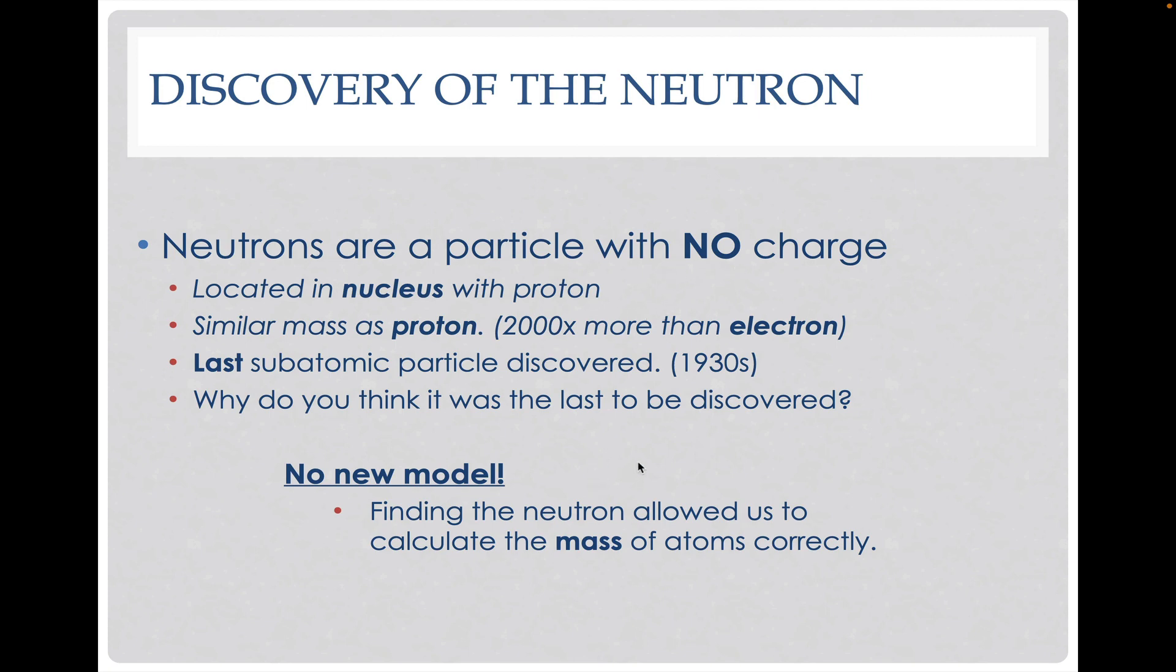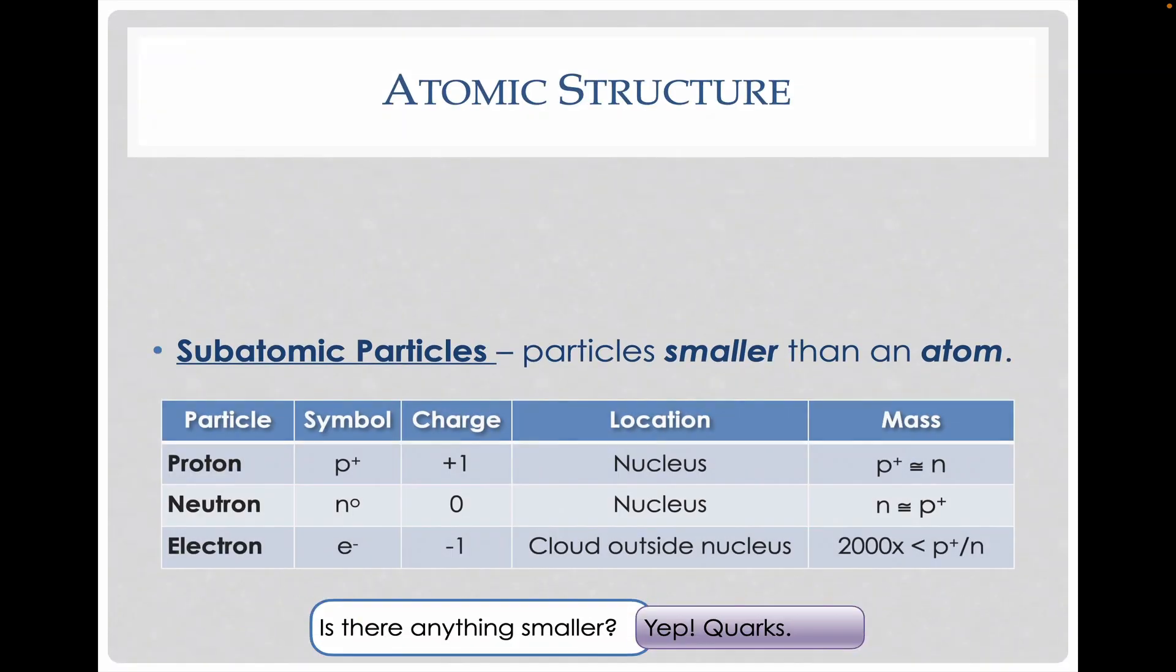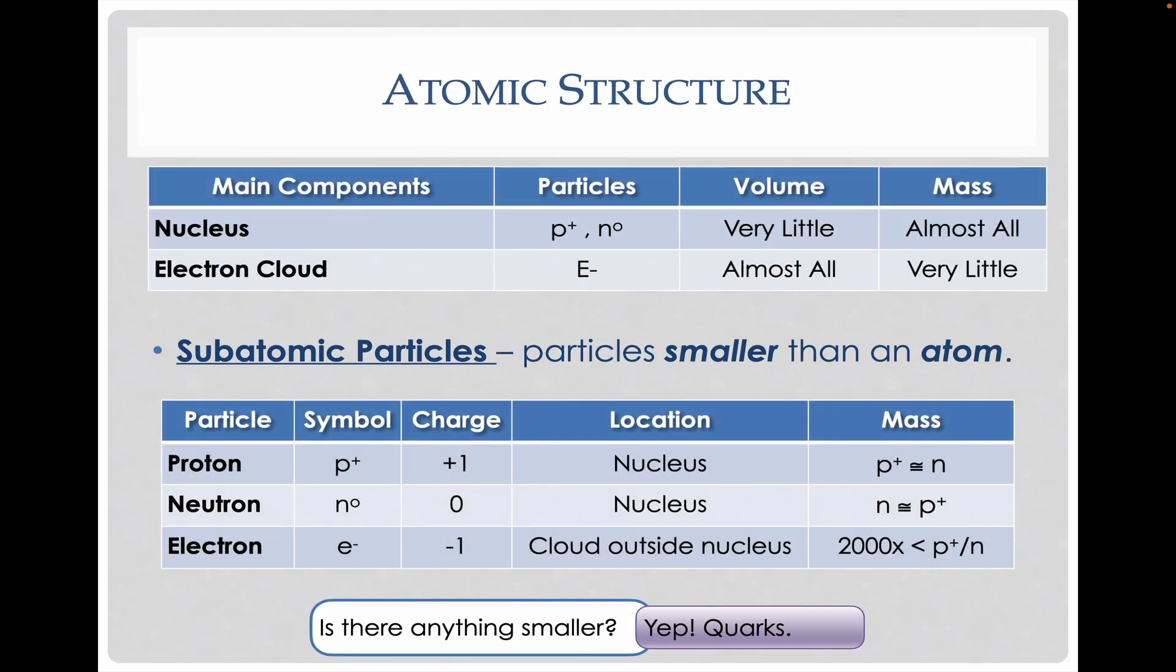From that, we can start building up this idea of atomic structure, or how does the atom look. Our current understanding: we know that there's two main components of the atom, the nucleus and the electron cloud. Inside the nucleus we find the protons and neutrons, and in the electron cloud we have the electrons. In terms of volume and mass, the nucleus has very little volume to it but almost all the mass, and then this is actually flipped for the electron cloud.